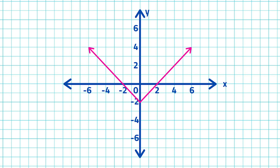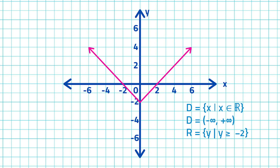The graph extends infinitely upward. Therefore, the domain is the set of all real numbers. Domain is the set of all x such that x is an element of all real numbers. In interval notation, domain is from negative infinity to positive infinity. The lowest point in the graph is (0, -2) and all points on the graph are above this point. The range of the function is: range is the set of all y such that y is greater than or equal to negative 2. In interval notation, range is from negative 2 to positive infinity, inclusive of negative 2.